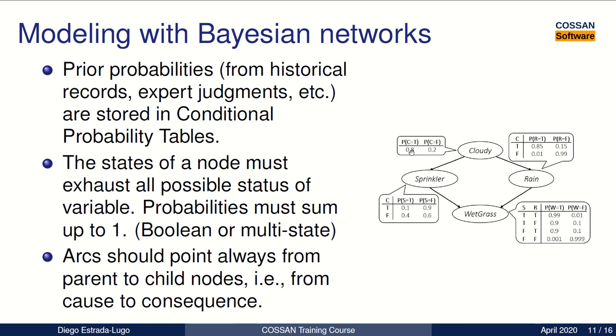And a node can have from two up to n number of states, so they can be boolean or multi-state. Also, the arcs should always point from a parent to child nodes, following the principle of going from cause to consequence.